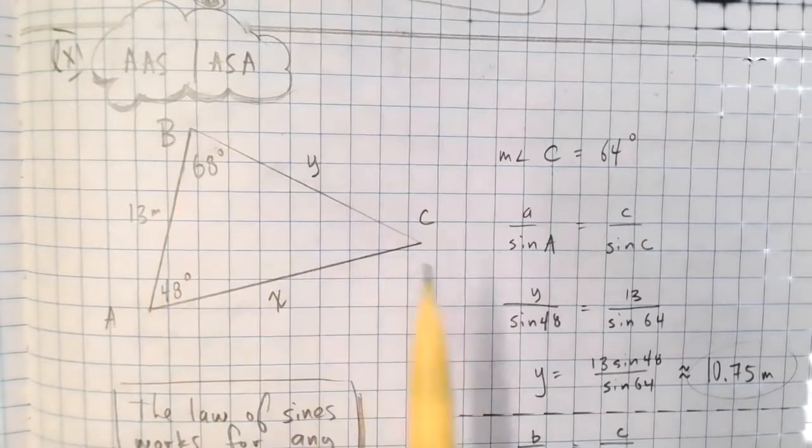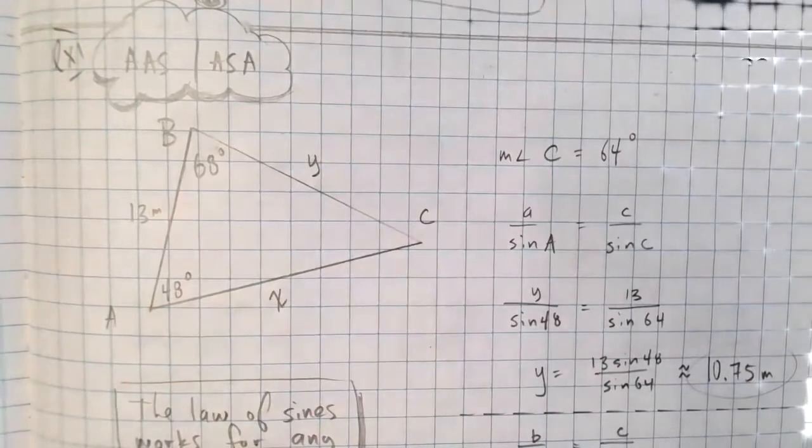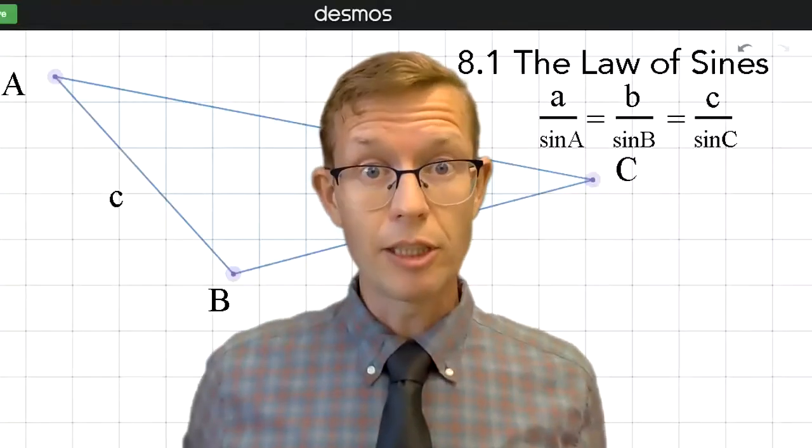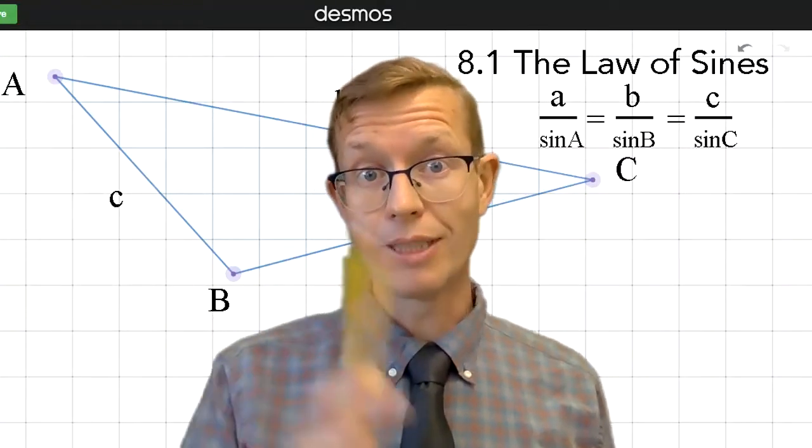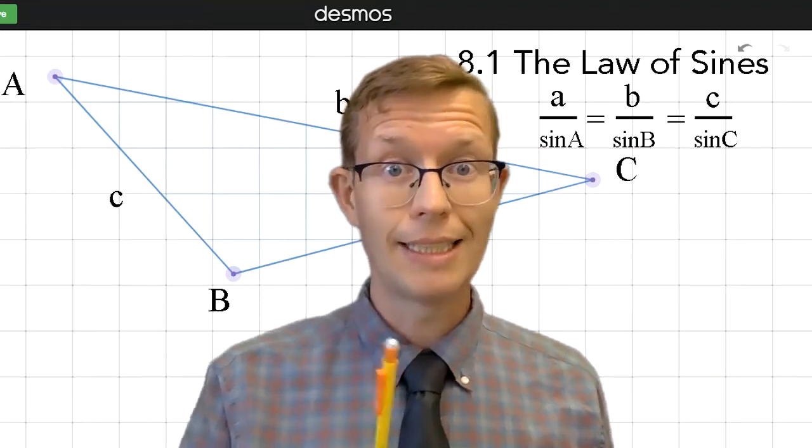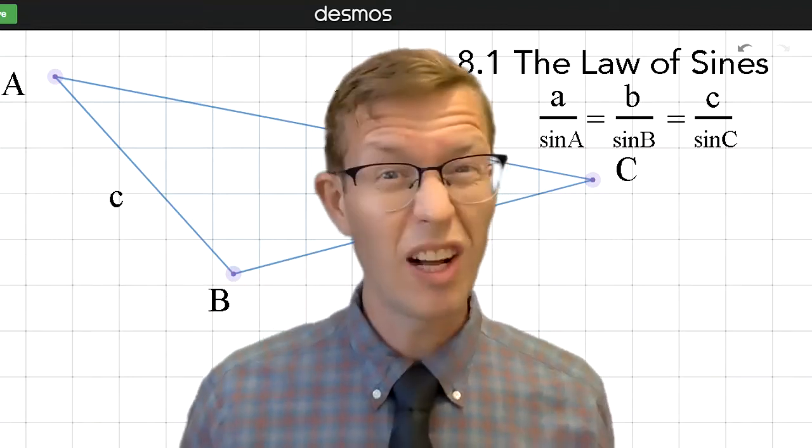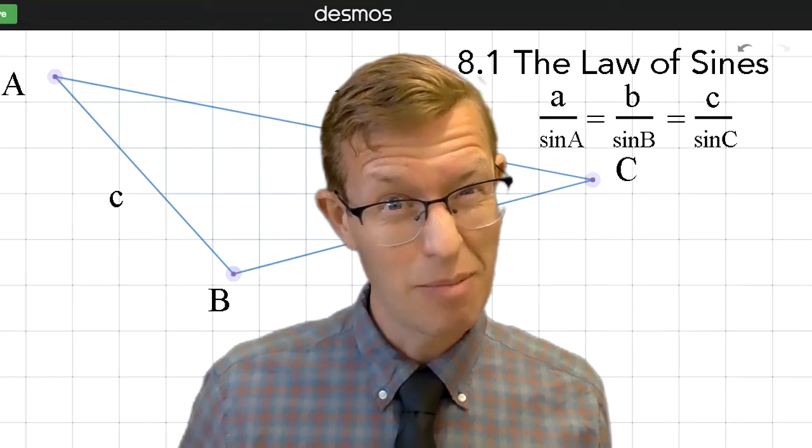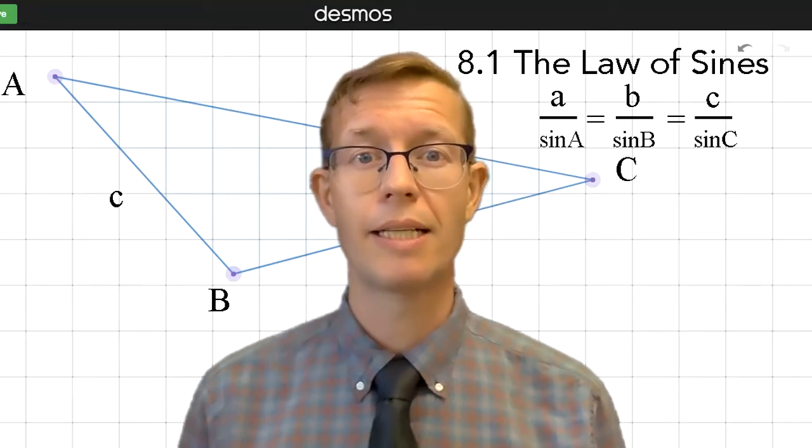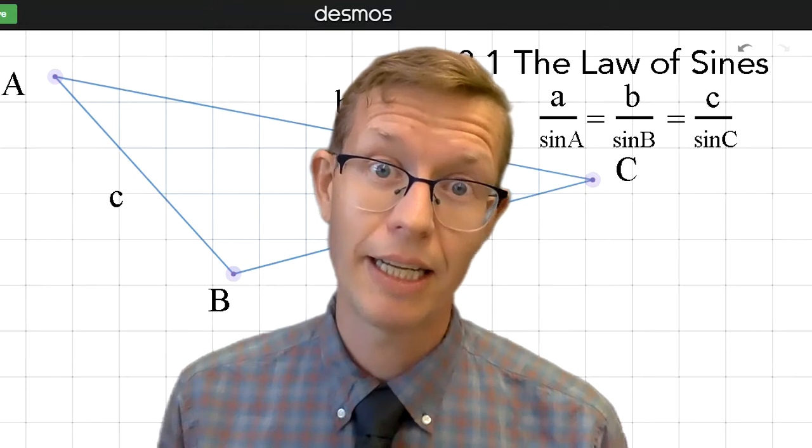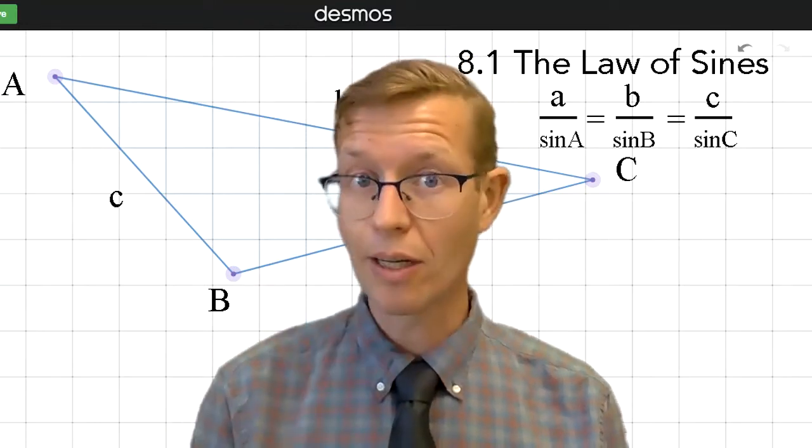But what if you were given two sides and an angle? How do you deal with that? Well, it makes a difference whether you have side-angle-side or side-side-angle. We don't call it angle-side-side. Maybe for obvious reasons. We're going to be looking at the most difficult case today, the side-side-angle.